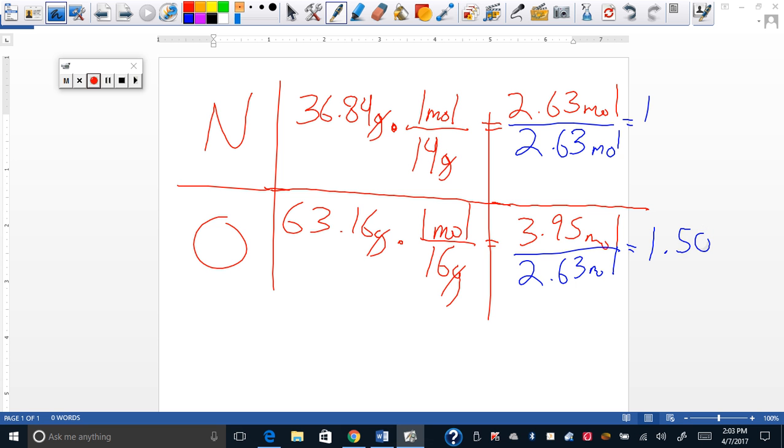Now, what did we talk about doing last time with a 0.50? You're going to double it. Double it. So you have N2O3. So that's right. So you're going to double this. Okay. Times 2. You're going to double both of them. This will be a 2. This will be a 3. So you get N2O3.